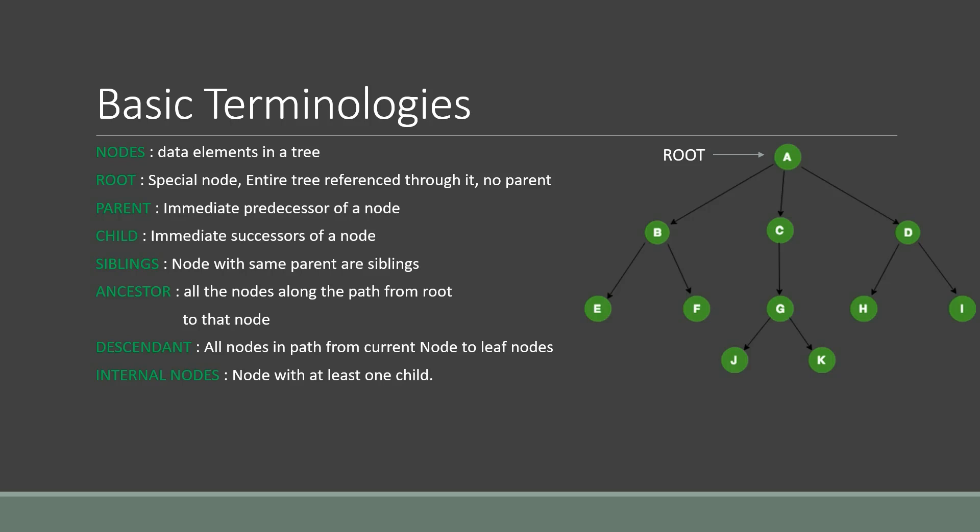Internal nodes are nodes with at least one child. In this example, A, B, C, D, and G all have at least one child, so they are the internal nodes. A leaf node is a node without any children — also called an external node. In this example, the leaves are E, F, J, K, H, and I.